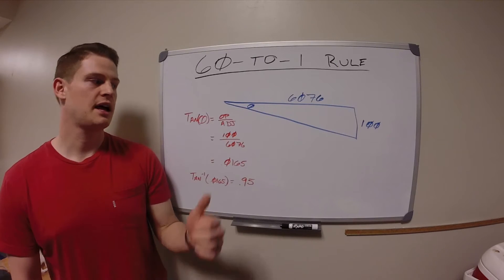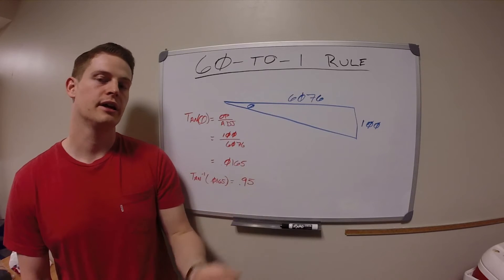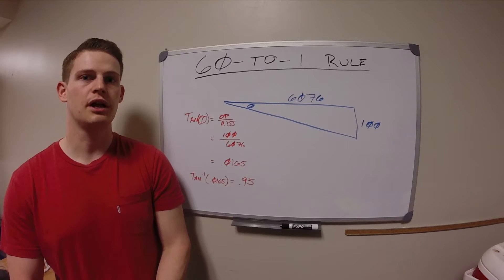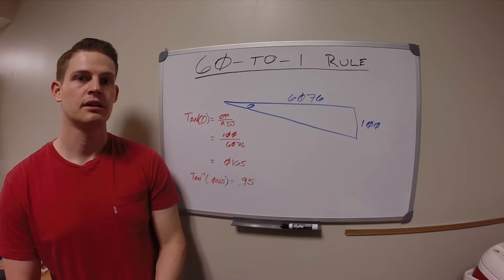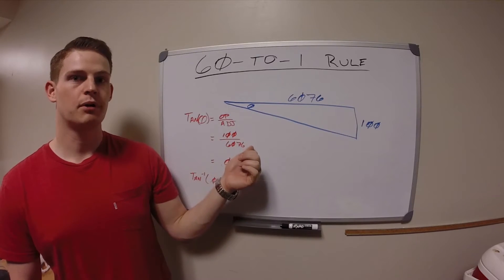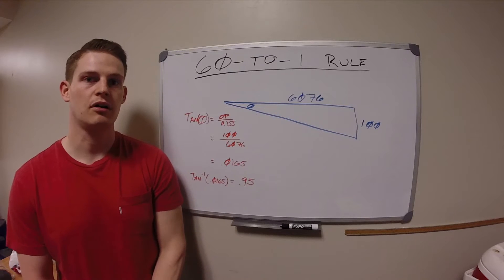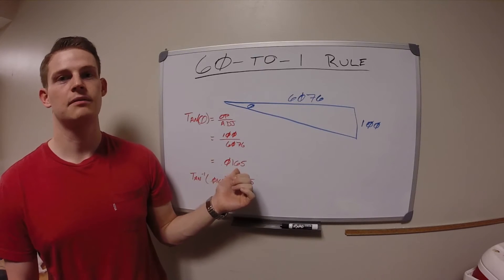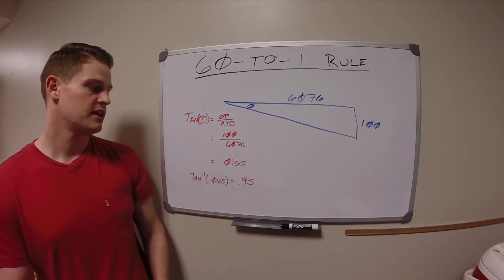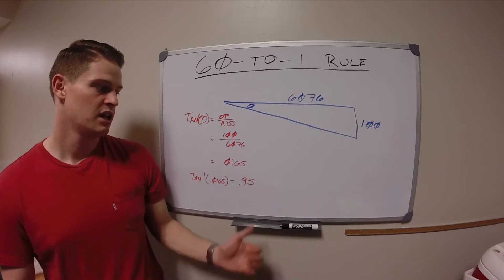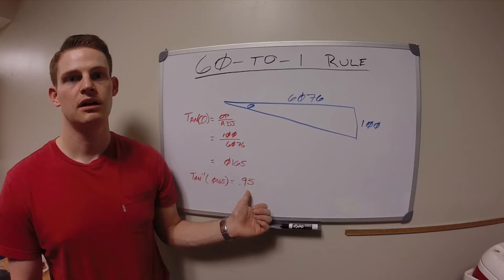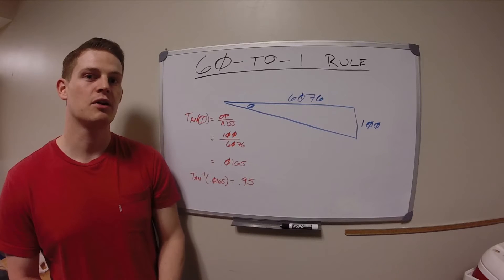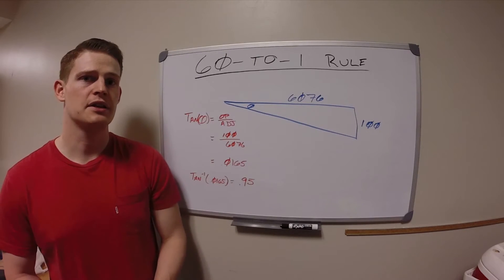From trigonometry, we know that the tangent of an angle equals the opposite leg over the adjacent leg. So if we wanted to determine the number of degrees necessary to pitch nose low — in reference to level flight — to achieve 100 feet of descent per nautical mile, with 6,076 feet per nautical mile, we take 100 divided by 6,076 and get 0.0165. Taking the inverse tangent of 0.0165, we find that 0.95 degrees of pitch is necessary to attain 100 feet of descent for every one mile traveled horizontally. We can round this up to one degree.